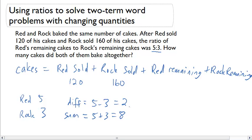Now we can use the difference when we look at the difference of what they sold. We know that the difference between what they sold is 160 minus 120, which is 40. And if I divide that by 2, which is the difference from our ratio, we get 20 per unit.